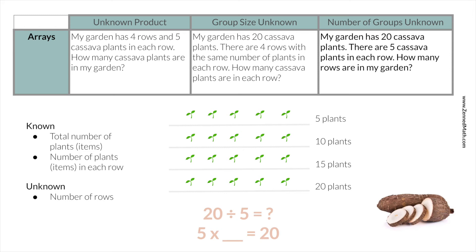Students can use the inverse operation — 4 times something to get to 20. The last array word problem type: my garden has 20 cassava plants. There are five cassava plants in each row. How many rows are in my garden? We know the total number of plants and the plants in each row, and we have to figure out how many rows there are. Again, a division situation using the inverse operation. So these are the three different word problem types for arrays — they all involve a different unknown.